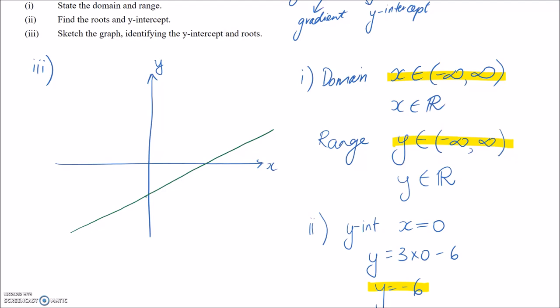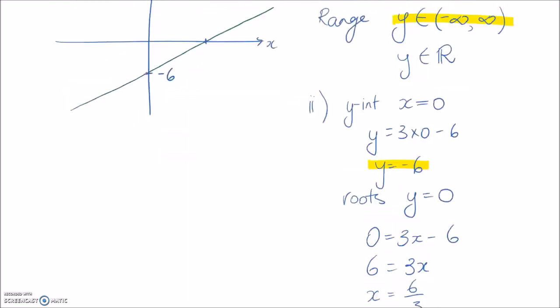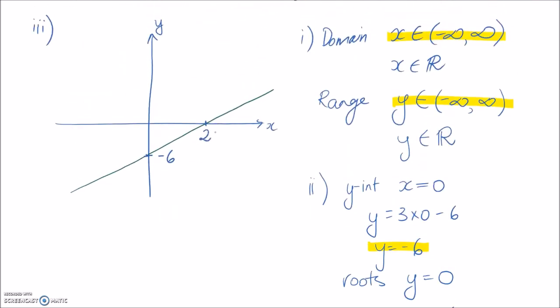So we decided that the y intercept was at negative six. So that's here. And the root, we only had one with this point here. And that was that x is equal to two. So we can mark that in. So that's all there is in terms of this video. And I will see you in another one.